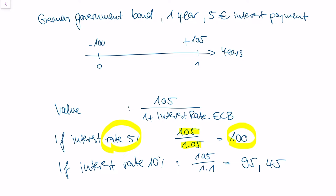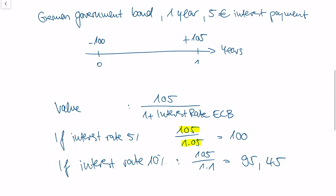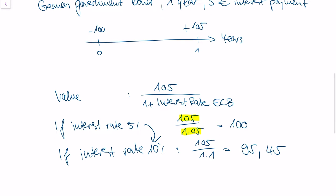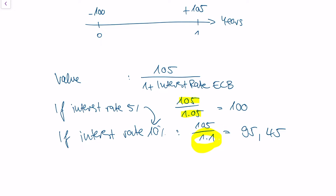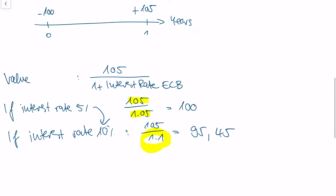Now imagine the interest rate changes from 5% to 10%. Our valuation formula changes accordingly — instead of dividing by 1.05, we divide by 1.1. This means the value of the German government bond drops to approximately 95 euros. So when the ECB interest rate changes, the value of our bond changes as well.